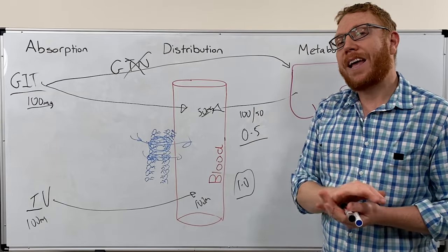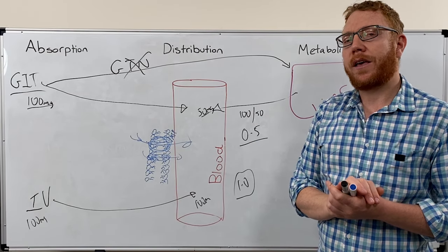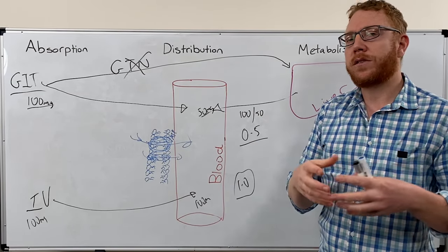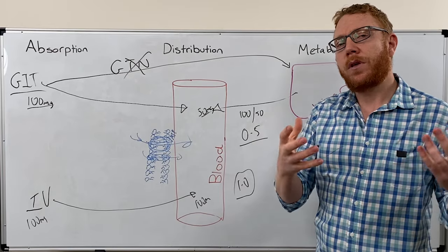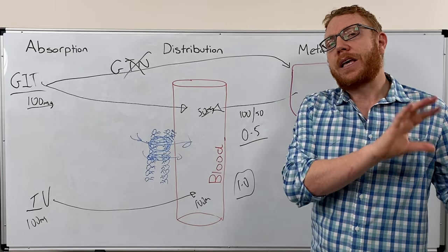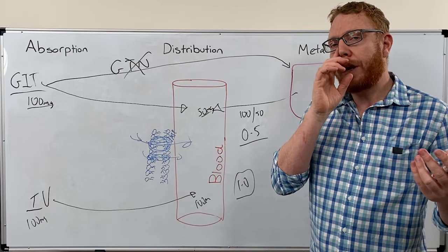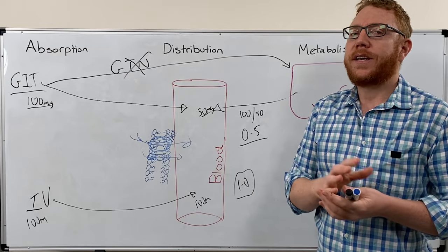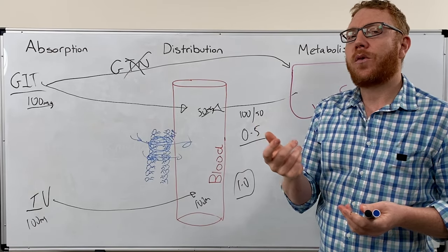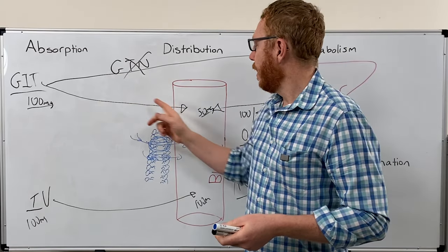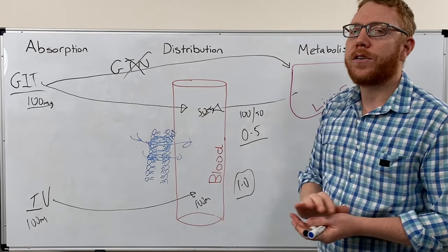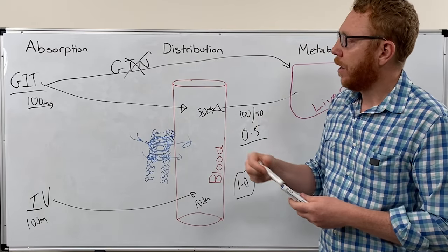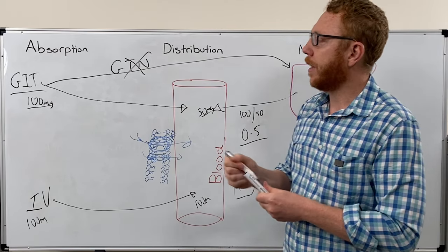Remember, you have enzymes in your gastrointestinal tract, and enzymes can interfere with medications. An example is insulin — insulin is a protein, and enzymes in the GIT might degrade it, so insulin doesn't get into the blood. This is why we don't give insulin through a GIT route.